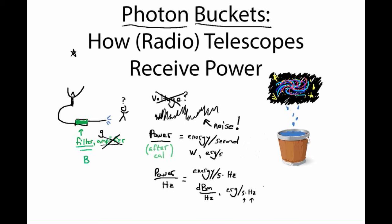We know hertz is like 1 over a second, so you might be tempted to cancel this out and call these just ergs. But those units are quite misleading. What we really mean are ergs per second per hertz, and we shouldn't cancel out those units of seconds with hertz, because it loses the fact that we are normalizing by the bandwidth over which we've made our measurement.